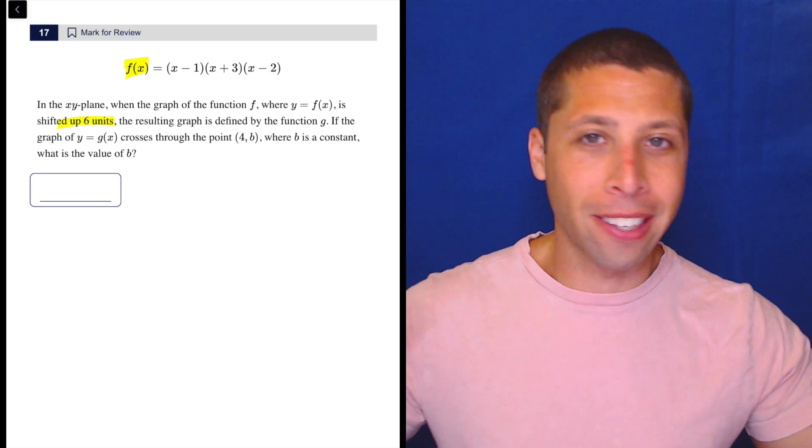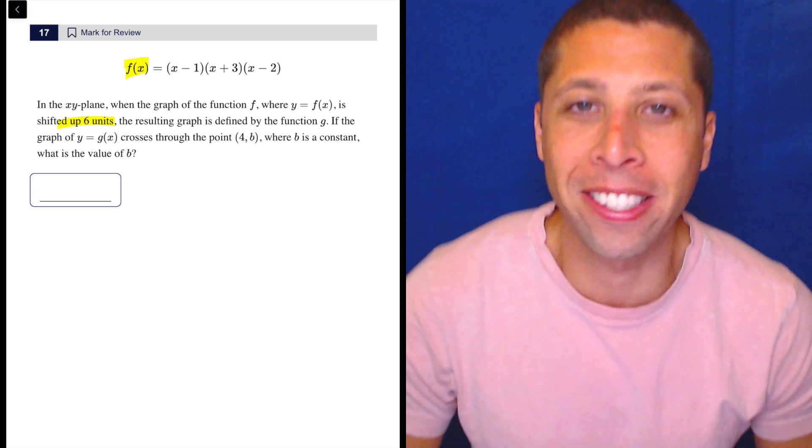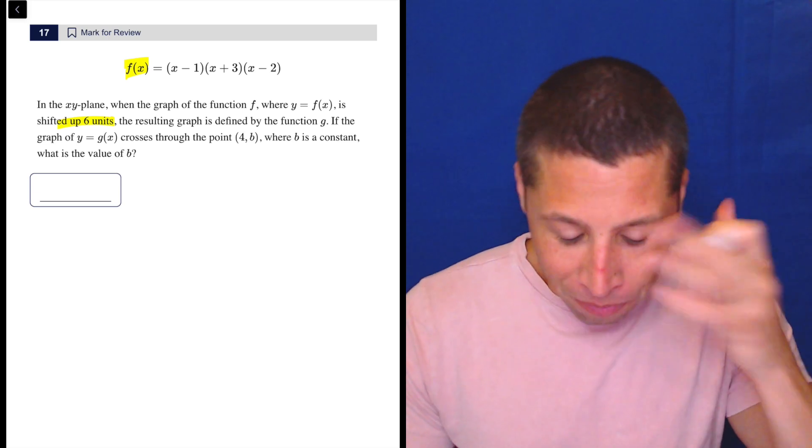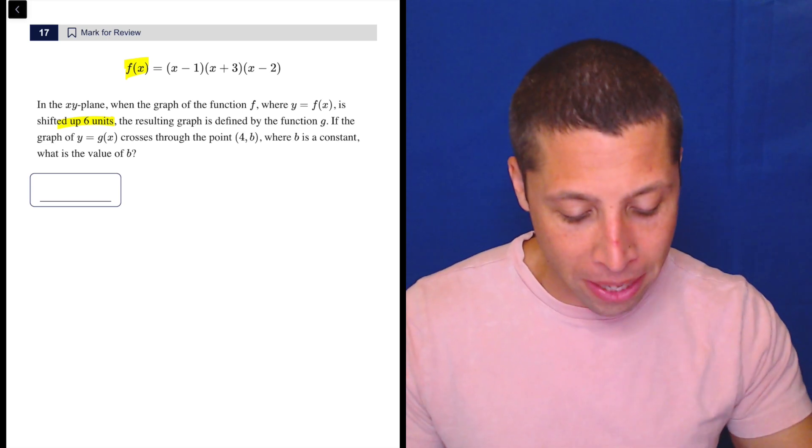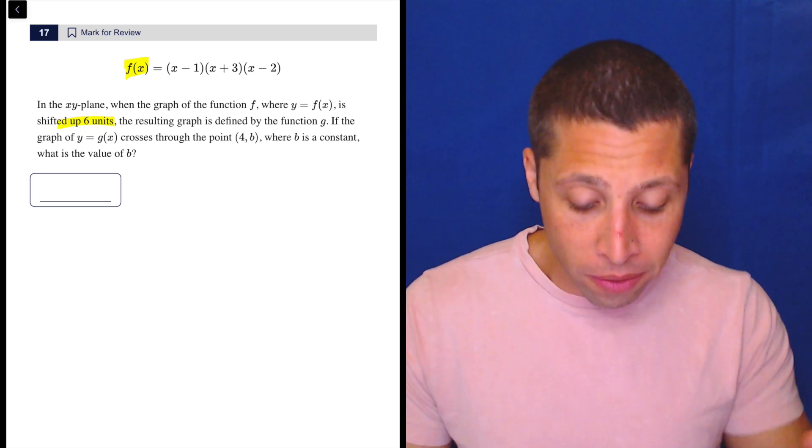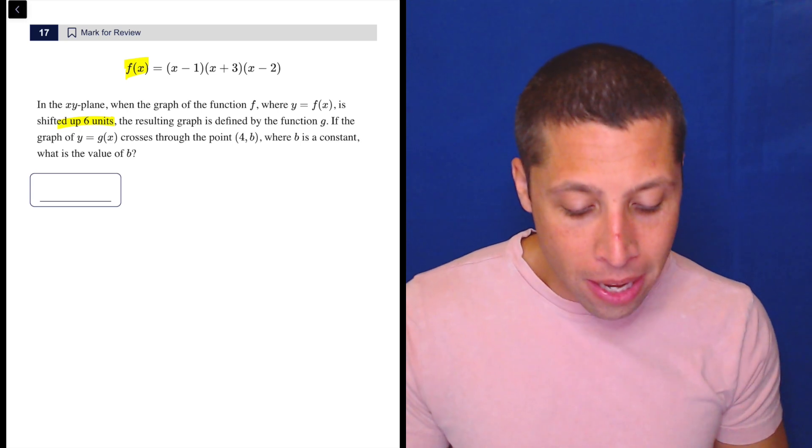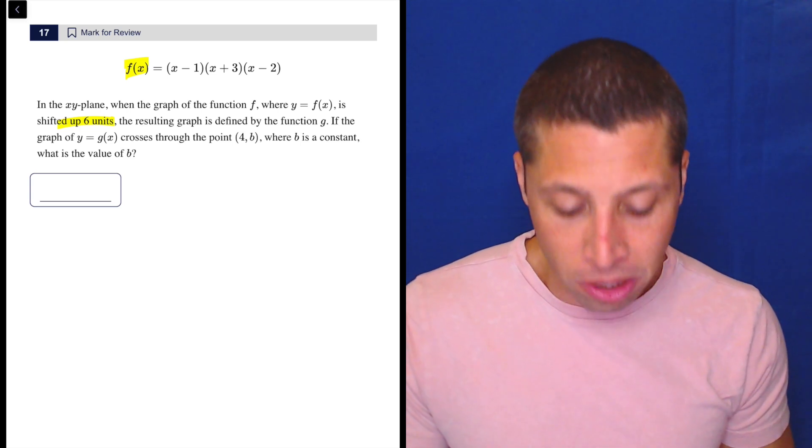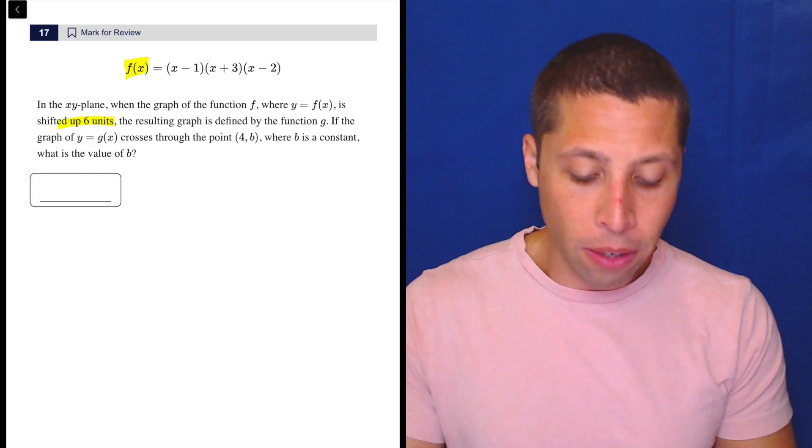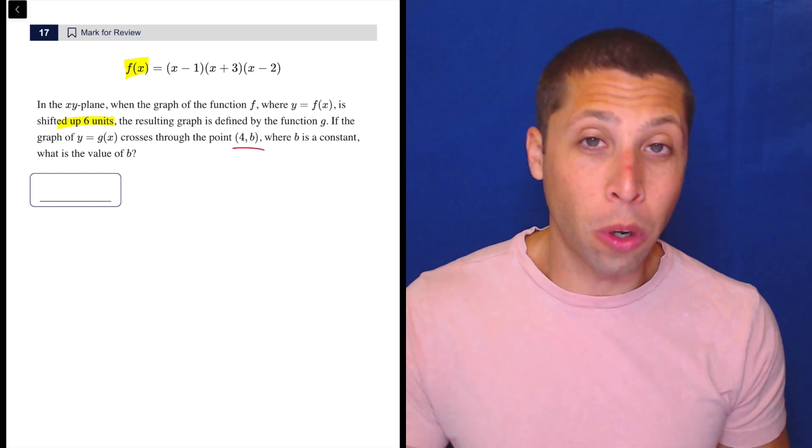So most of that is just filler. There's an XY plane and we graph things in it. That's it, right? The SAT does this a lot to kind of intimidate you. But moving on to the next sentence, if the graph of y equals g(x) crosses the point (4,b), where b is a constant, what is the value of b? Basically we're looking for the point where x is four on this other thing.